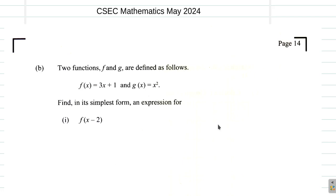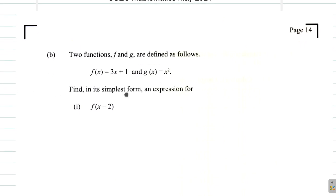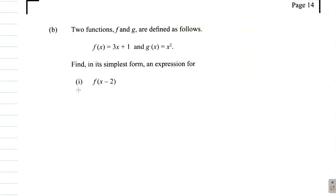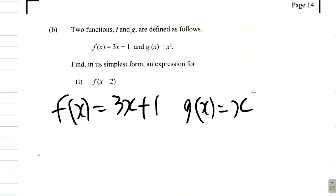Part B of question 4 of the CSEC Mathematics May 2024 paper. Here, it says two functions f and g are defined as follows. We have f of x equals 3x plus 1, and g of x equals x squared.